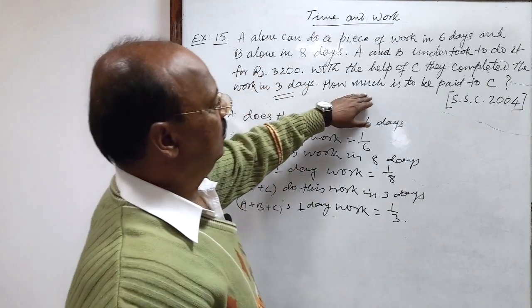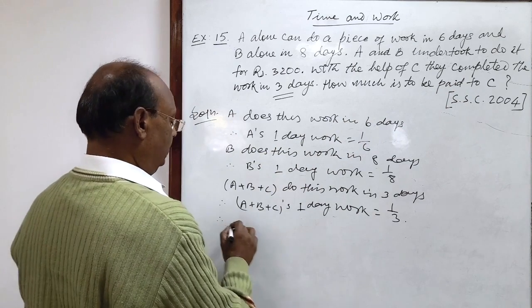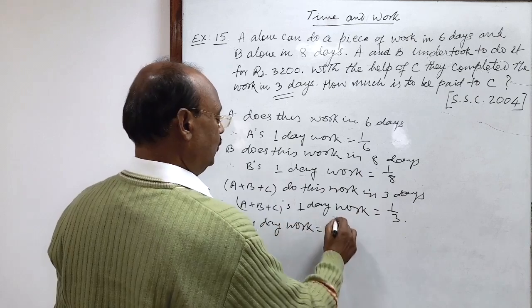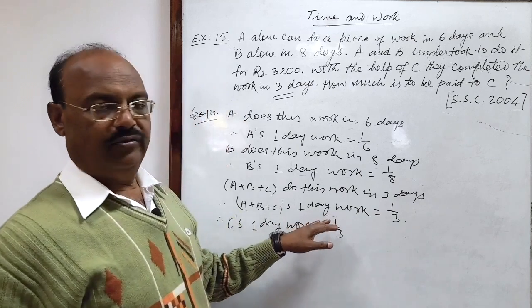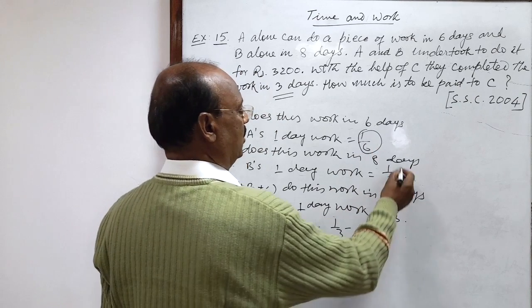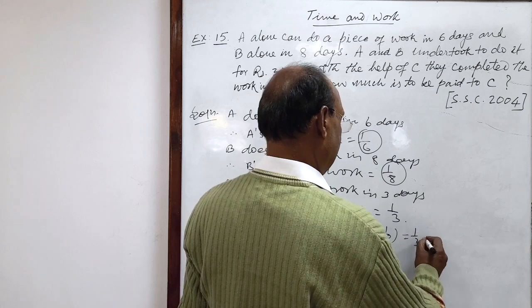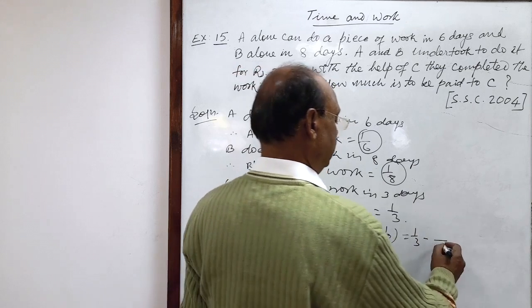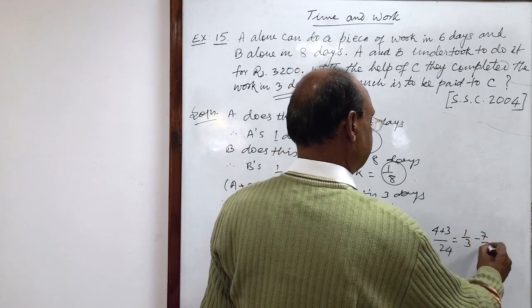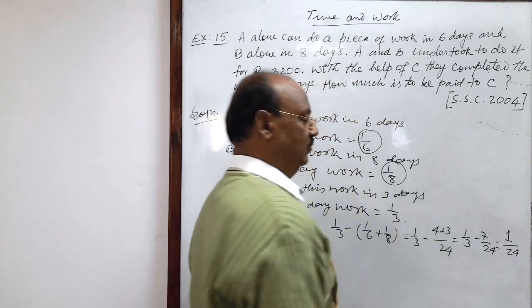We have to find out the amount which has to be paid to C, so we will find out amount of work done by C in one day. Therefore C's one day work is equal to one by three minus amount of work done by A and B. So one by six plus one by eight. This is equal to one by three minus, here LCM will be 24, four plus three. This is equal to one by three minus seven by 24. Again LCM will be 24 and here eight minus seven, that is one by 24.